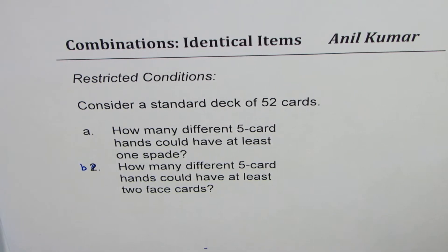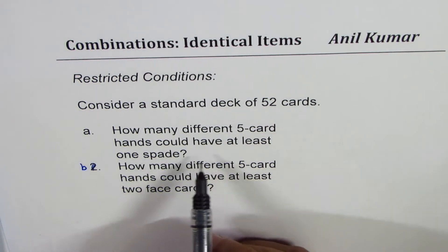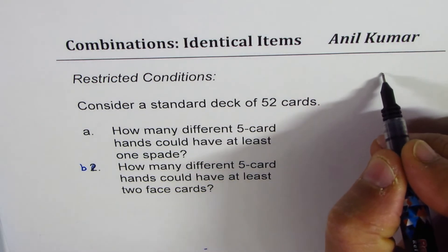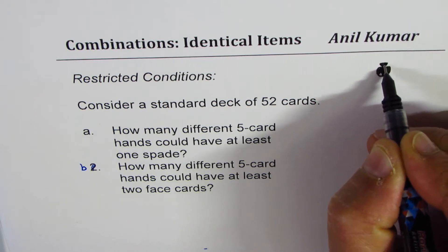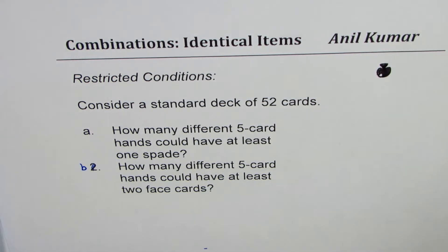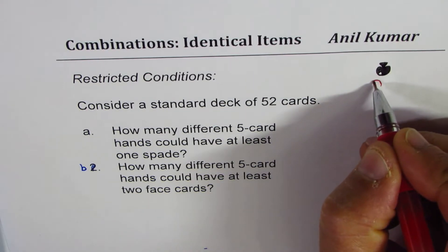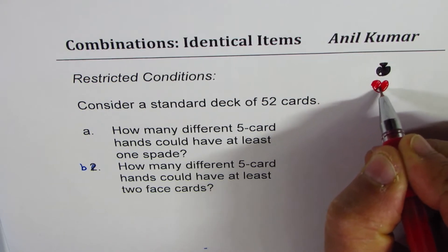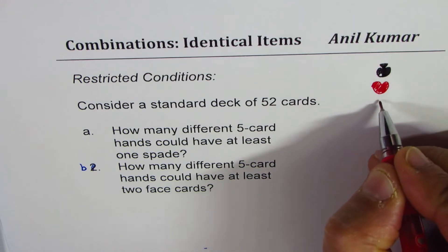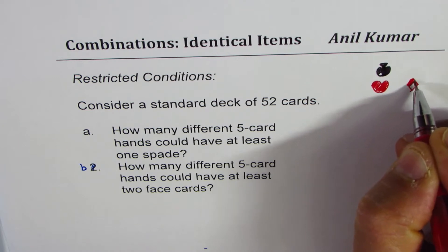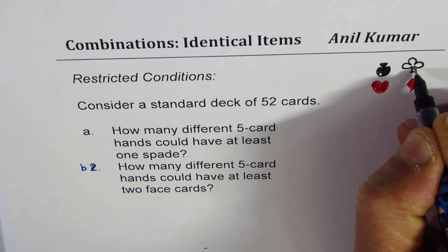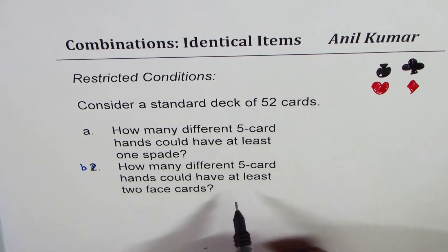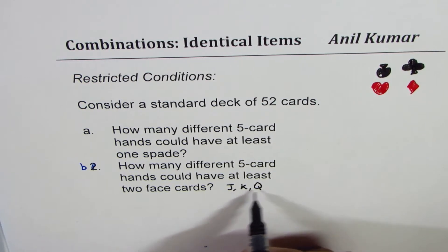As you know, a 52-card standard deck will have four suits. Spades is one of them, so in 52 cards we have spades — I made it upside down — we have hearts, diamonds, and clubs. There are 13 cards of each. And there are 12 face cards. The face cards are jack, queen, and king — three face cards for each suit makes it 12.